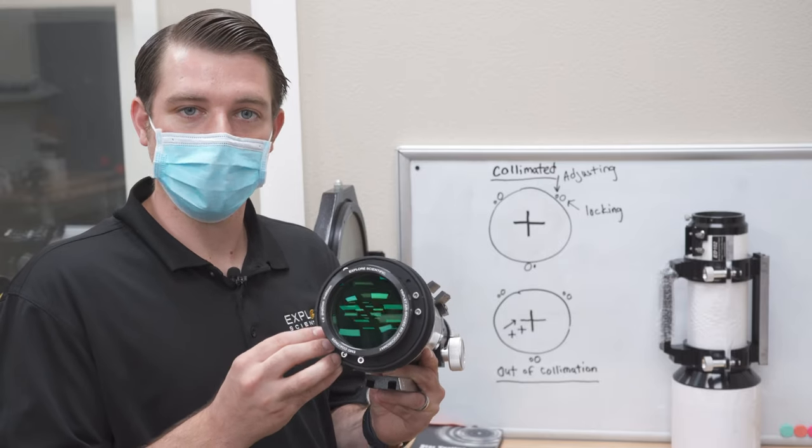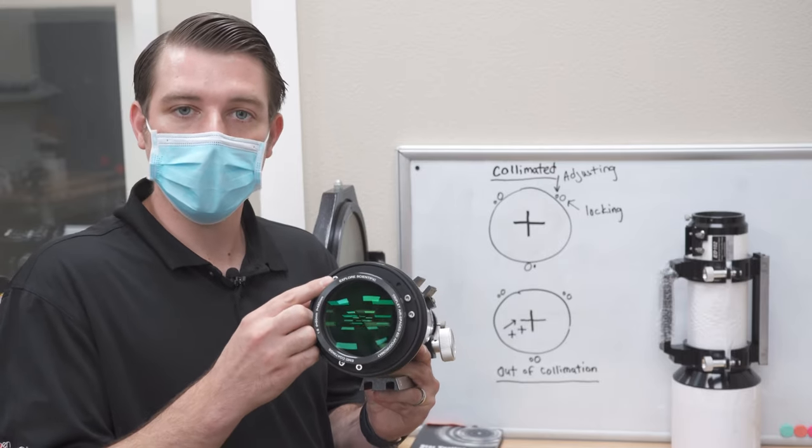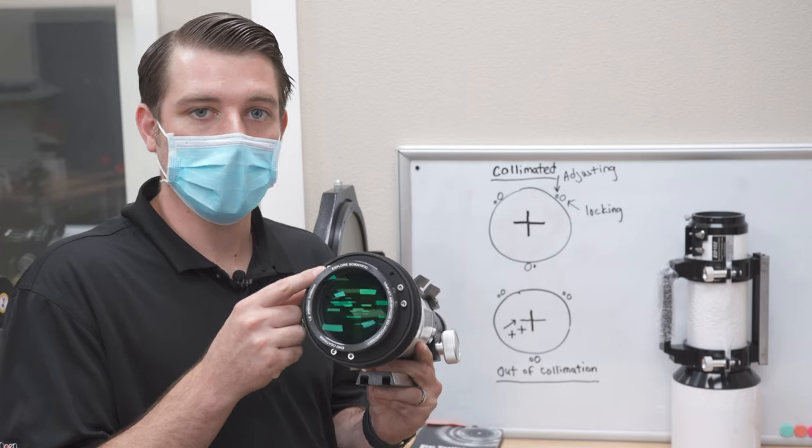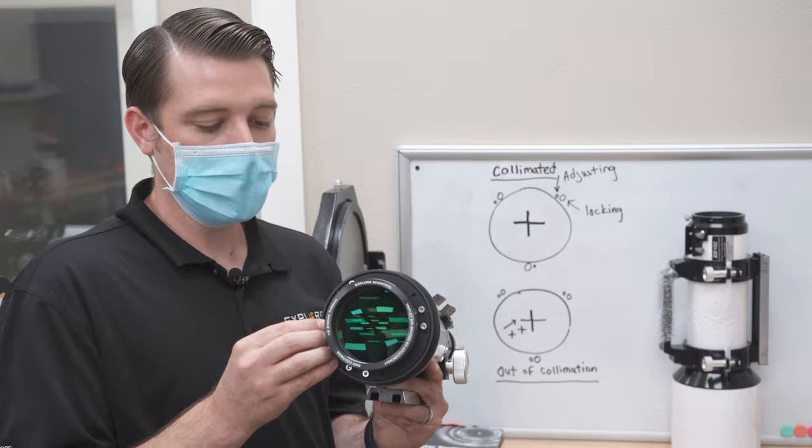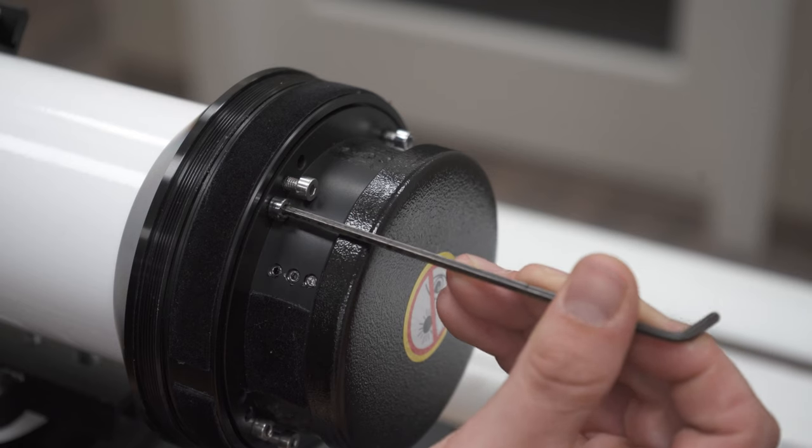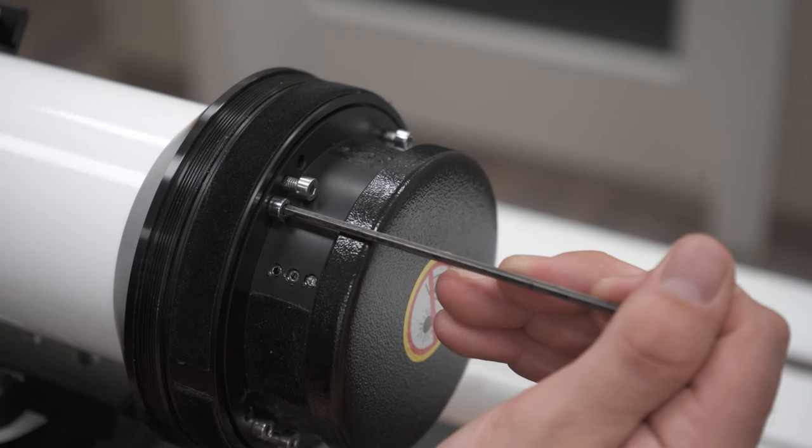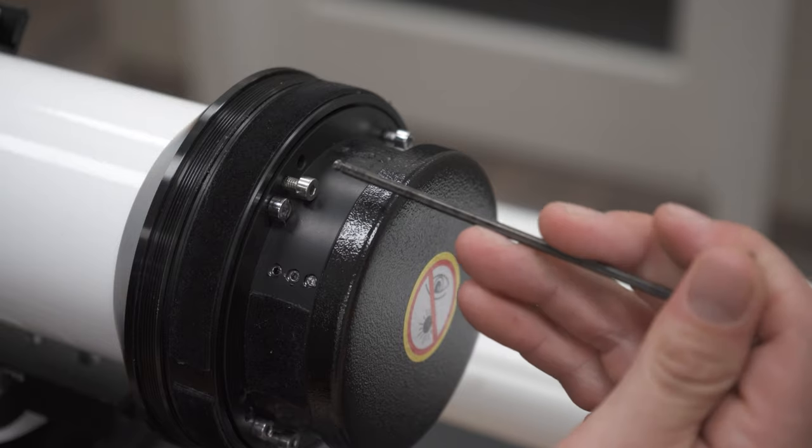Now to start your collimation process, you're going to loosen this locking screw very slightly, anywhere from a quarter to half a turn. Then you will be able to adjust your adjusting screw to achieve perfect collimation.